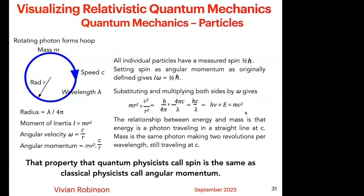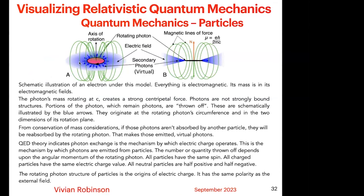That indicates that the relationship between energy and mass is: energy is a photon traveling in a straight line at c, and mass is the same photon making two revolutions per wavelength still traveling at c. I strongly suggest that the best indication of what quantum physicists call spin is the same as what classical physicists call angular momentum. So here's how you would represent — in this case consider it as an electron — you have a particle, the black ellipses is just its rotation, you have the positive field on the inside and negative field on the outside, and the magnetic fields in the third dimension spreading out from the particle.